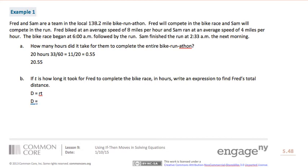And so since Sam runs at an average speed of 4 miles per hour, our rate is 4. And our total time was 20.55 minus t, which is how long it took for Fred to complete the bike race.